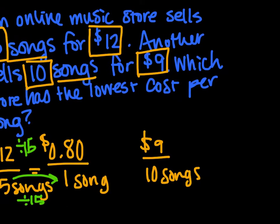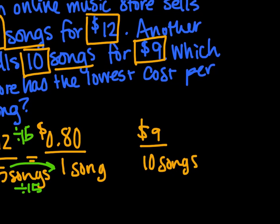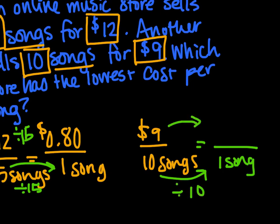Let's do this other one. We have $9 for 10 songs. How are we going to turn 10 into simply one song? Well, we need to divide 10 by 10. We're going to do the same thing over here. Divide 9 by 10. And we get $0.90 per song.